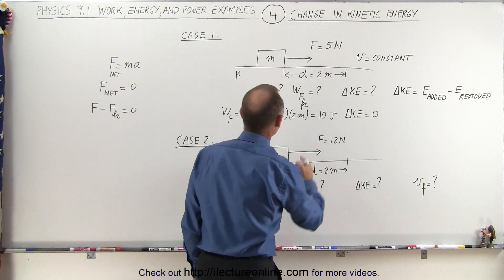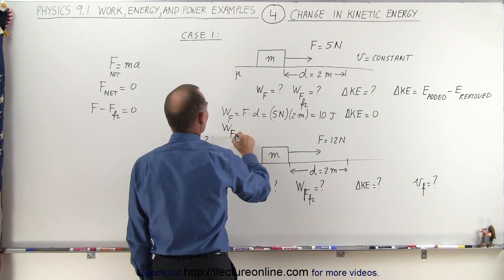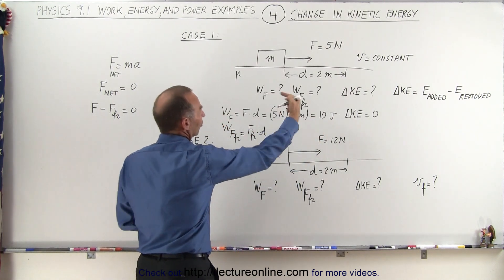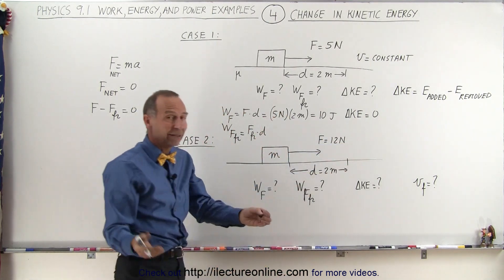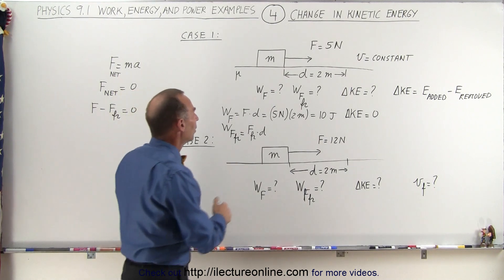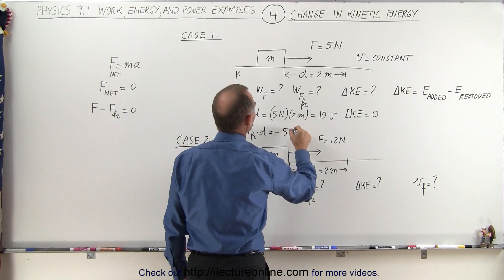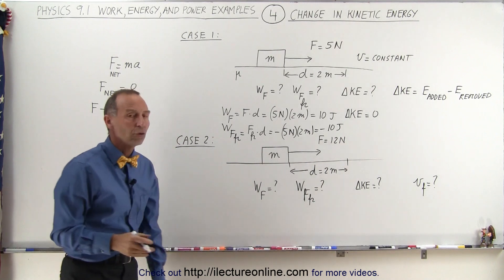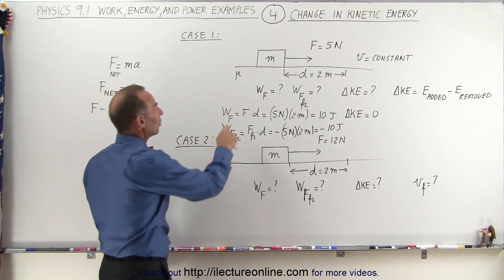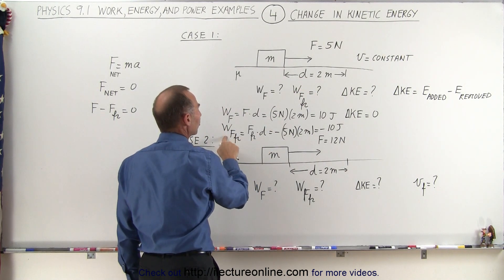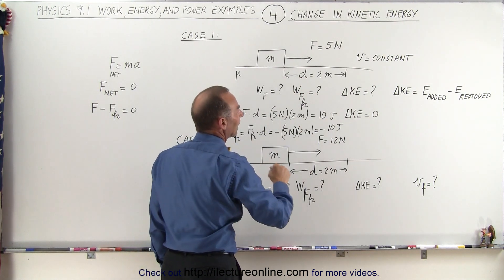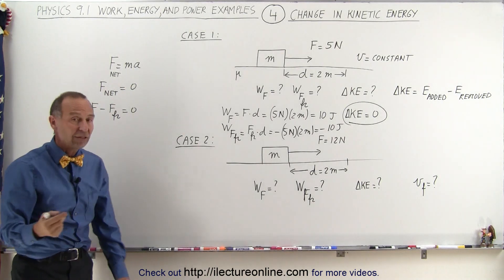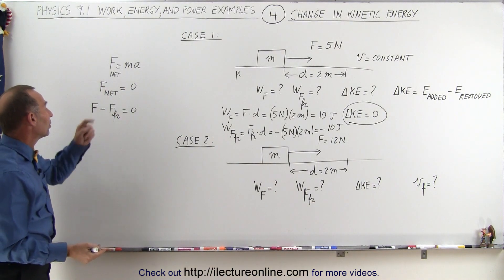Therefore, the work done by the friction force equals the friction force times displacement. But the friction force acts to the left while displacement is to the right — an angle of 180 degrees, and the cosine of 180 is minus 1. So the work done by friction is minus 5 newtons times 2 meters, which equals minus 10 joules. The 10 joules added by the applied force minus the 10 joules removed by friction gives a net energy change of zero, so the kinetic energy change is zero, the velocity is constant, and the net force is zero.